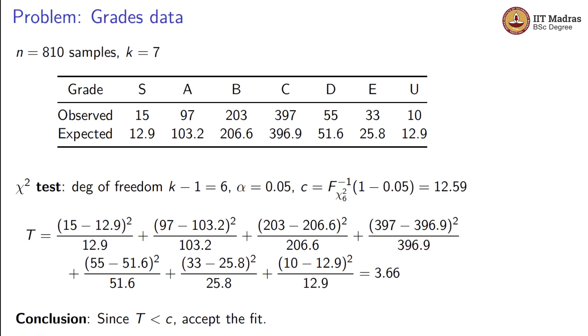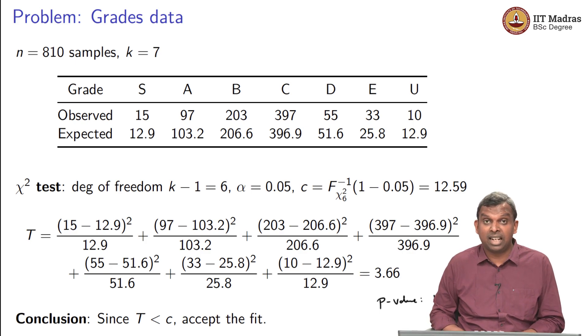Now we see that the value of T is lesser than the critical value, so we accept the fit. Instead of critical value, if you want to find the p-value, you will get 1 minus F chi-squared 6 of 3.66 and that will work out to something larger than 0.05, something greater than 0.05. We see that the p-value is larger and the test statistic is smaller than the critical value and we ended up accepting the fit. You can do a similar calculation whenever you want to, of course for any other situation, and this is how a typical chi-squared test with data is run. That is the simple application in grades data.